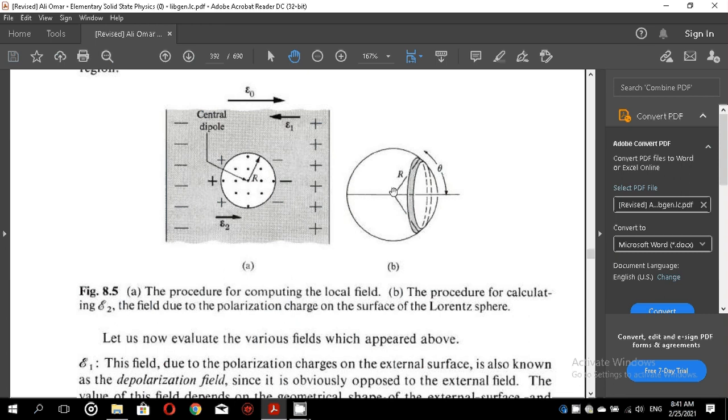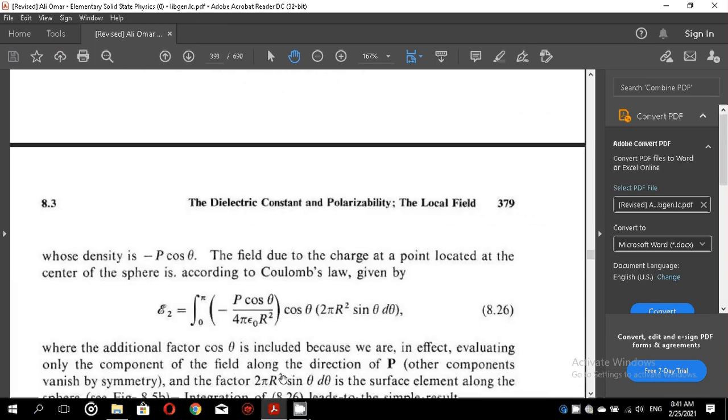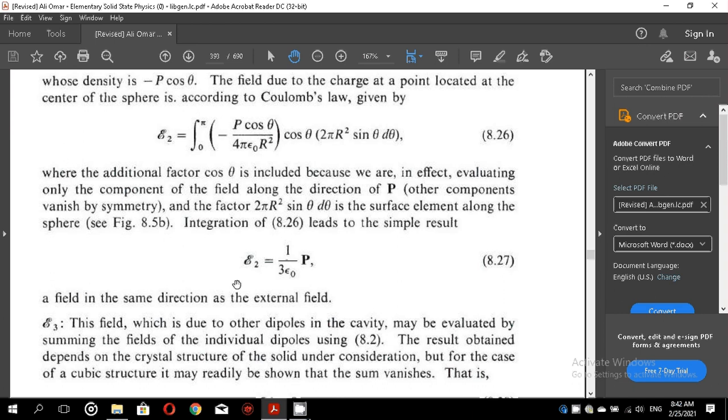So here, this surface, the shaded surface is given by this equation, 2 pi r square sine theta d theta is the surface element along the sphere. Integration of equation 8.26 leads to the simple result that E2 equals 1 over 3 epsilon 0 into p, a field in the same direction as the external field.